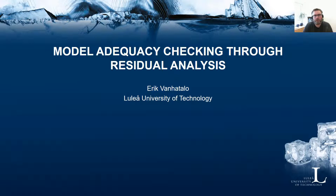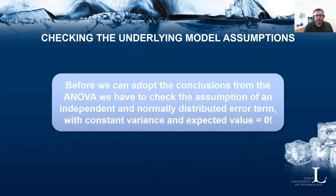Before we can adopt the conclusions from the ANOVA, our model, or the results as we have them, we need to check the assumption of an independent and normally distributed error term with constant variance and expected value equal to zero. The primary tool for this check is to study the residuals from the model — in other words, the prediction errors.